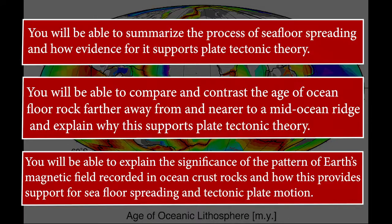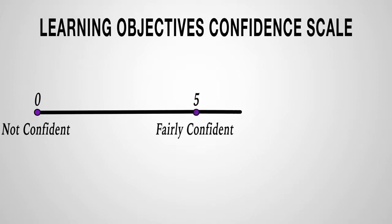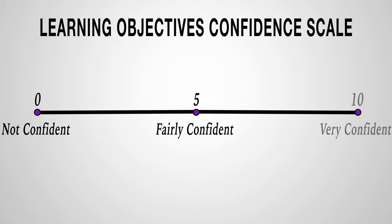When you have finished watching the video, you'll be taking a short questionnaire asking you to rate your confidence on a scale from zero to ten on performing all of the learning objectives. Zero means not confident you can do any of the objectives, five means fairly confident you can do some, and ten means very confident you can do all of the objectives.